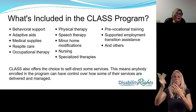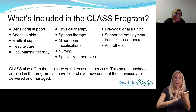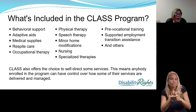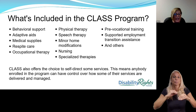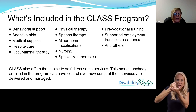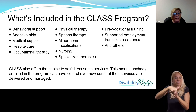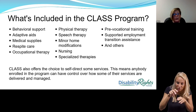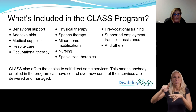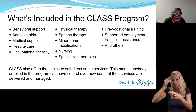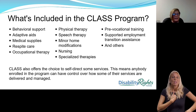What is included in the CLASS waiver program? Behavioral supports, adaptive aids, medical supplies, respite care, occupational, physical and speech therapies, minor home modifications, nursing, specialized therapies — some of those can be aquatic therapy, equestrian therapy, and massage therapy — pre-vocational training, supported employment, transition assistance, and others. CLASS also offers the choice to self-direct some of those services, meaning anyone enrolled in the program can have control over how some of their services are delivered and managed.